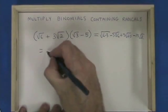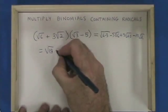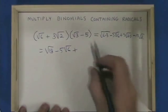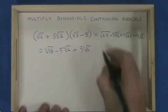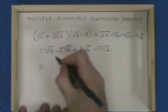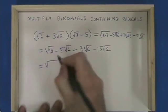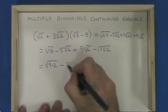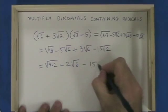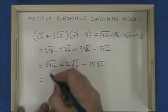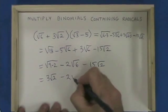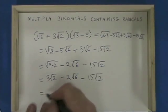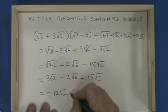Root of 6 times 3 is root 18. Minus 5 root 6. Since 2 times 3 is 6, I have plus 3 root 6 minus 15 root 2. 18 has a perfect square factor of 9, so I break it into square root of 9 times 2. Minus 5 root 6 plus 3 root 6 is minus 2 root 6. Square root of 9 is 3, so I have 3 root 2 minus 2 root 6 minus 15 root 2. 3 root 2 minus 15 root 2 is negative 12 root 2, and minus 2 root 6 — that's my answer.